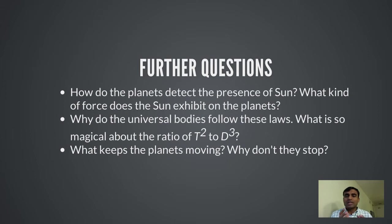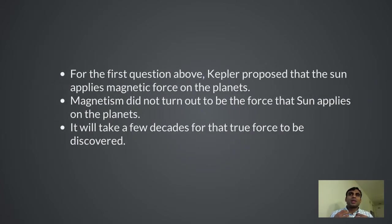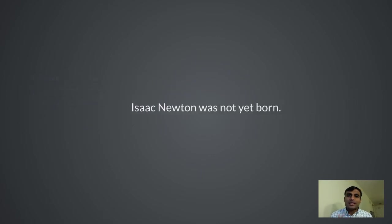Similarly, another unanswered question is: what is so magical about this ratio of T² to D³? Why are planets doing that? And what keeps the planets moving? On Earth, if you set something into motion it eventually comes to rest — so why don't planets stop? Kepler proposed that the force the sun applies on the planets was magnetic force, because that was the only force he knew that acts at a distance. But magnetism did not turn out to be the correct answer.